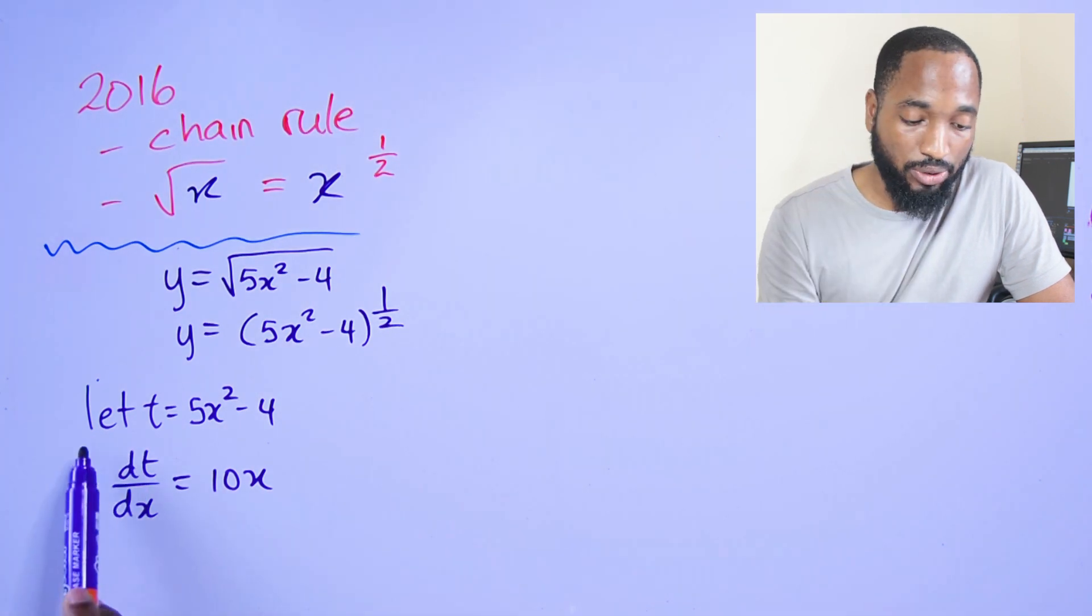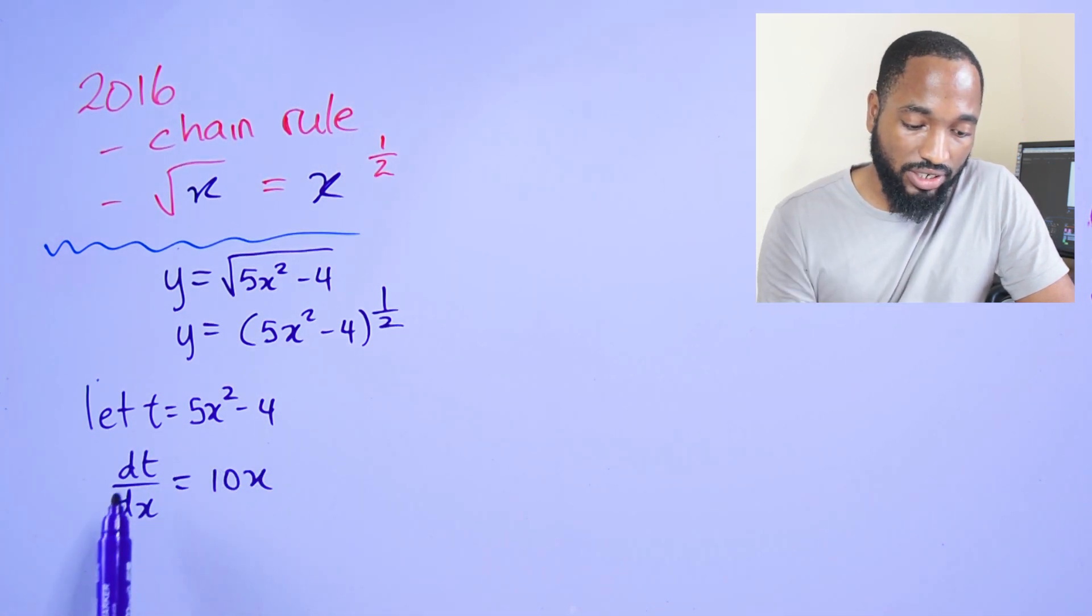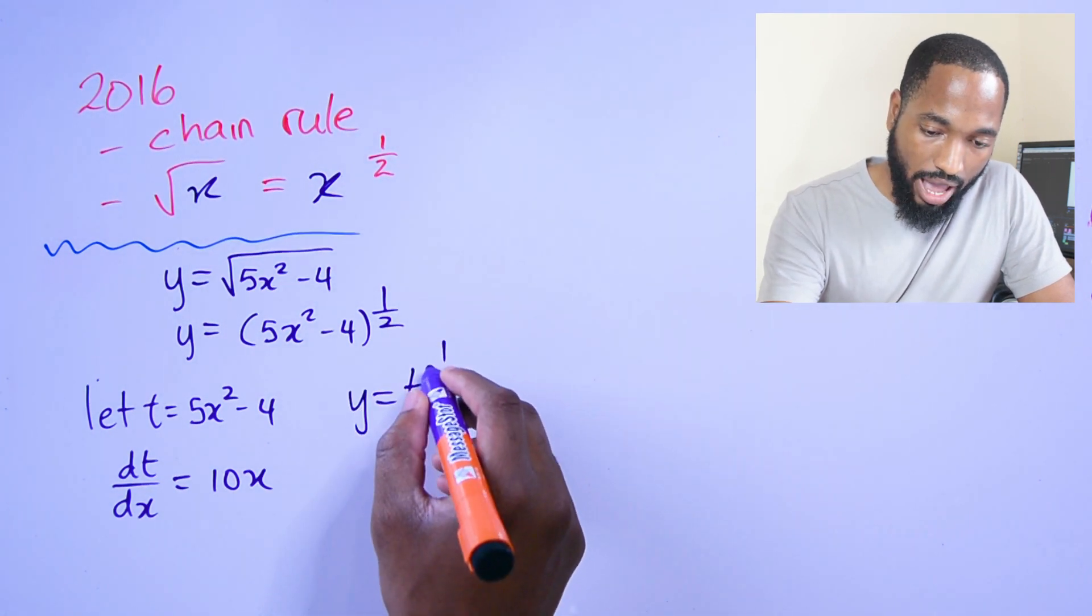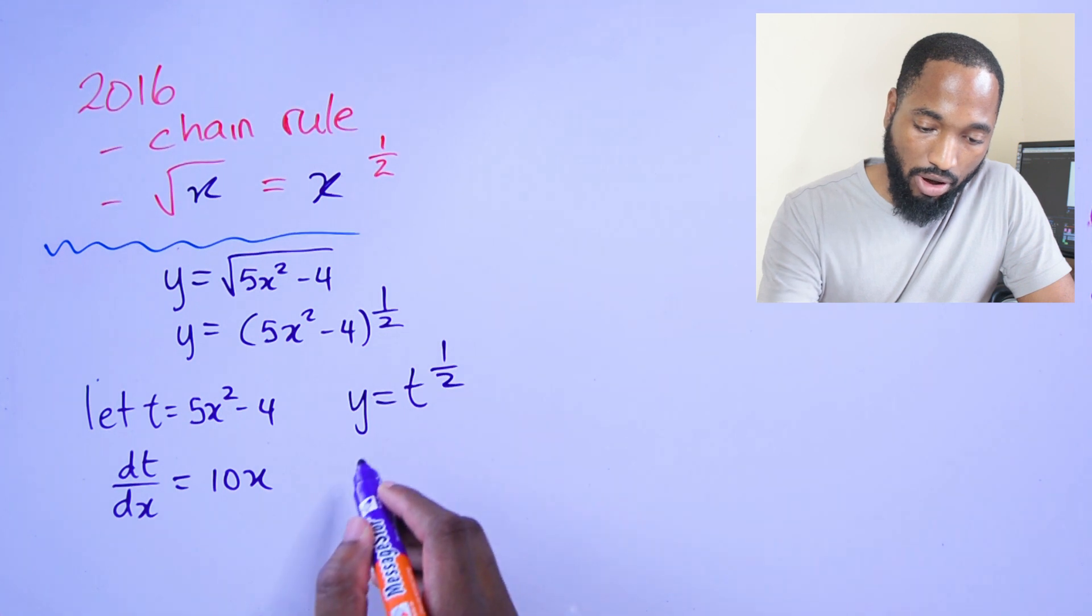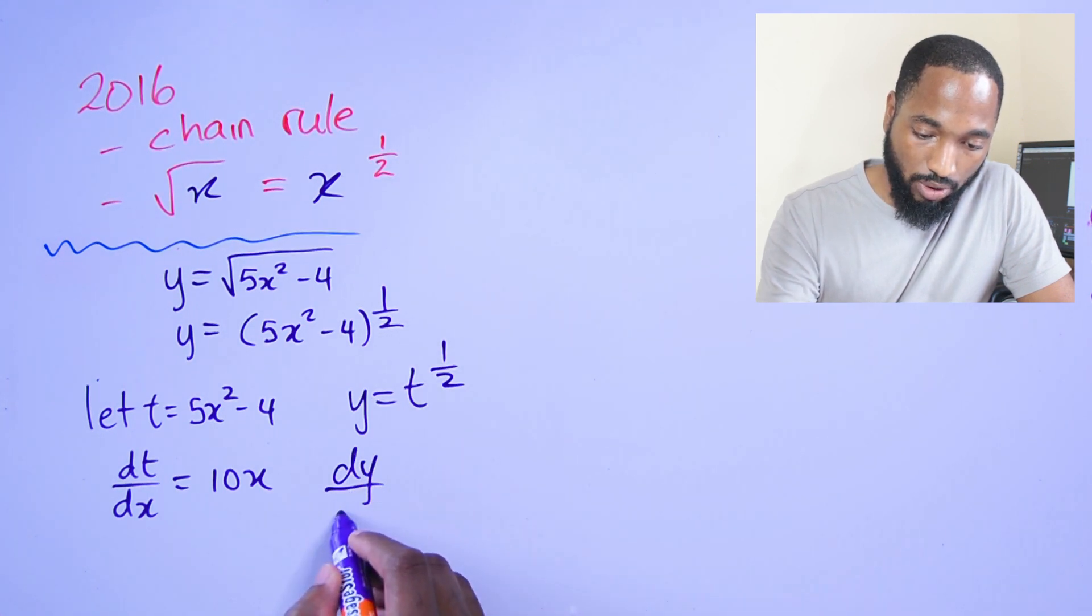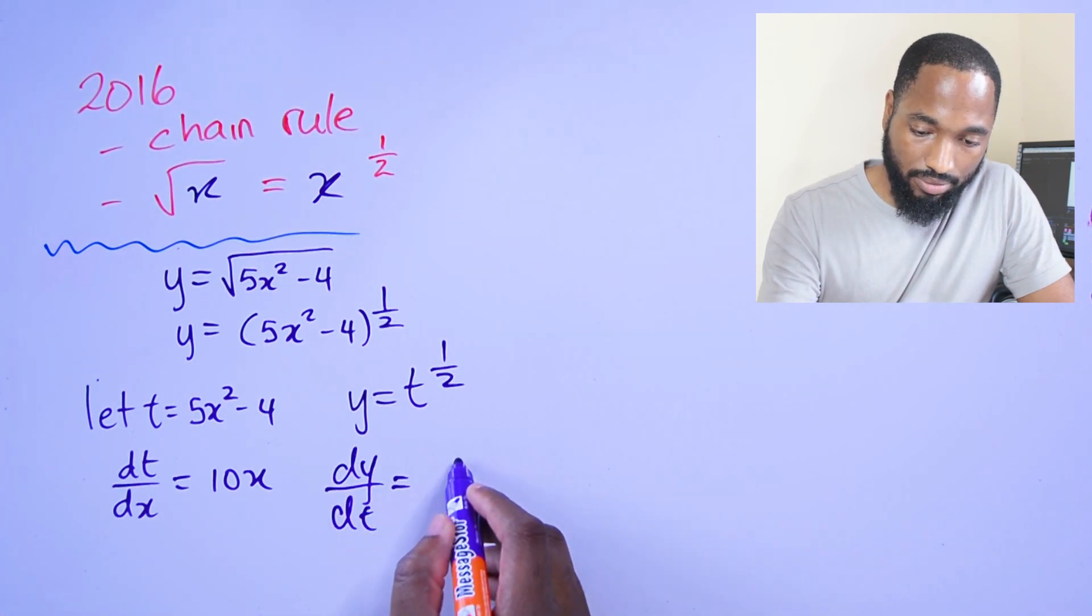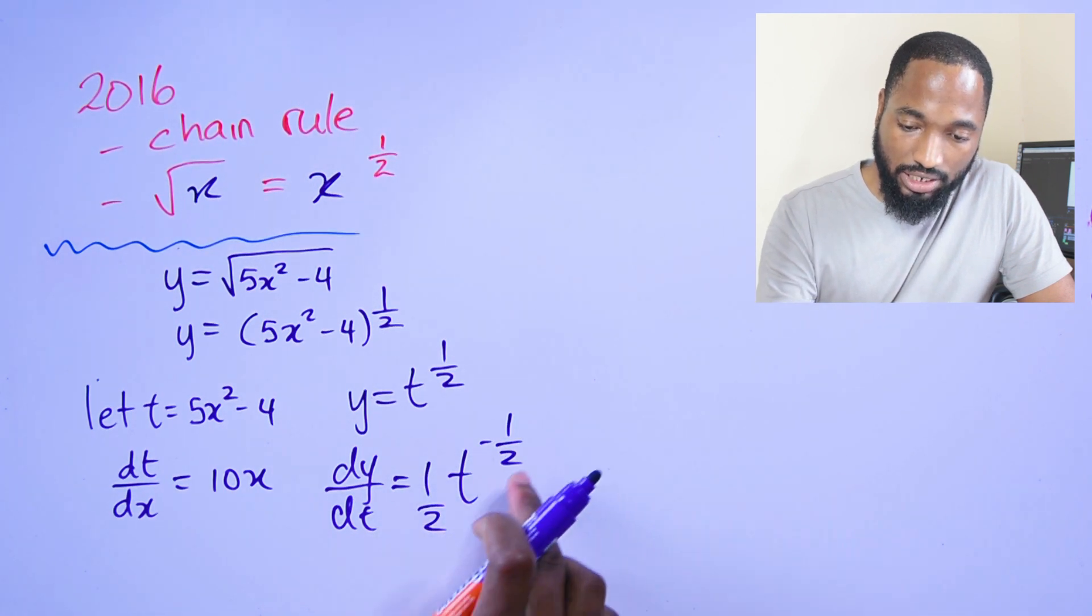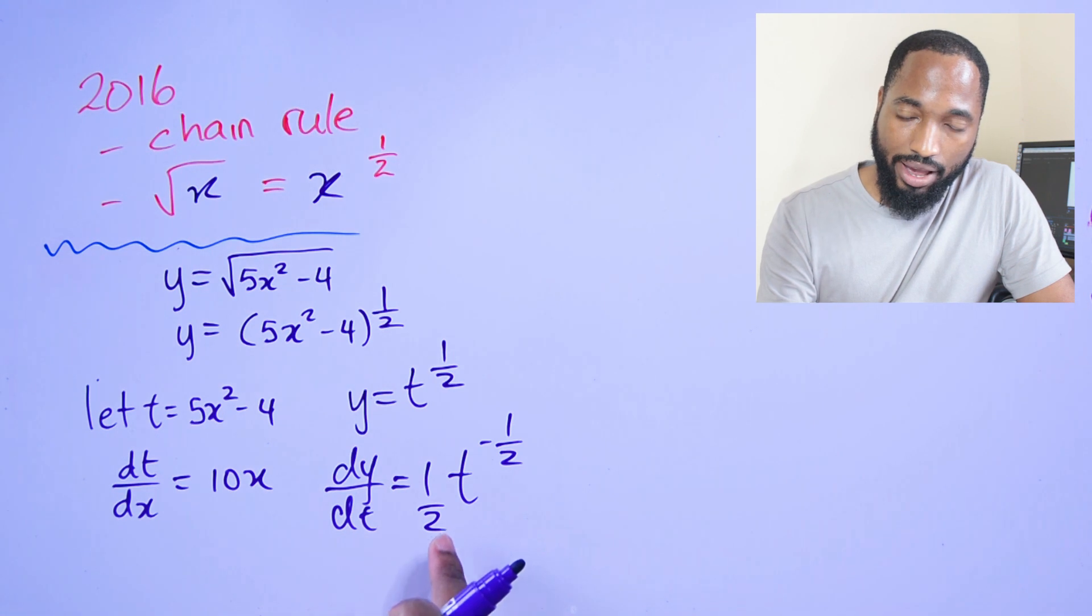To begin the chain rule process, I let t equal to 5x² - 4. dt/dx is now 10x. I can now say that since y is equal to t^(1/2), dy/dt would be (1/2)t^(-1/2).